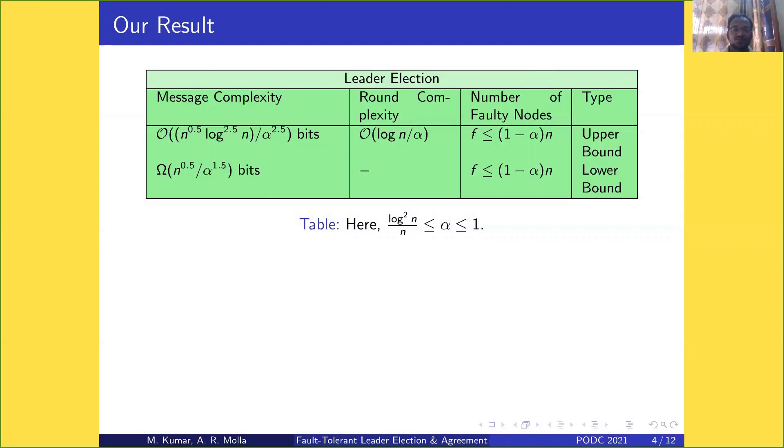For the lower bound, we have Ω(n^0.5 / α^1.5) bits. As α increases, message complexity decreases, so if α equals 1, the message complexity is sublinear.